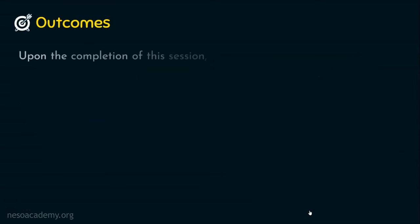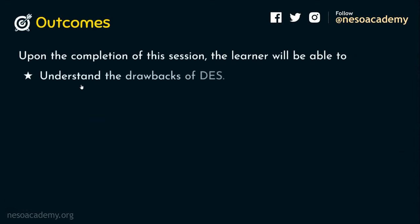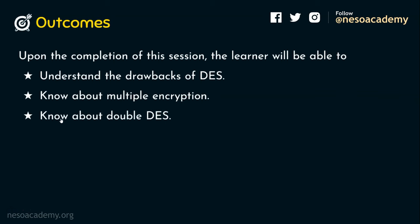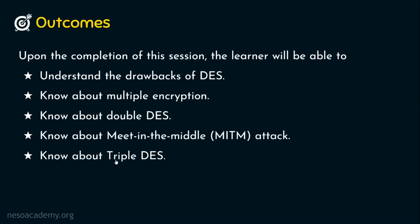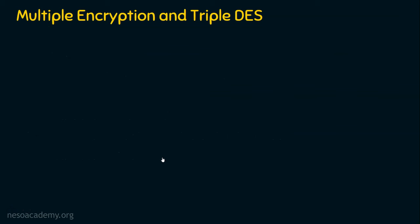Upon the completion of the session, the learner will be able to: outcome number one, understand the drawbacks of DES; outcome number three, we will know about double DES; outcome number four, we will know about meet in the middle attack; and outcome number five, we will know about triple DES. Let's step into the topic of the day — multiple encryption and triple DES.